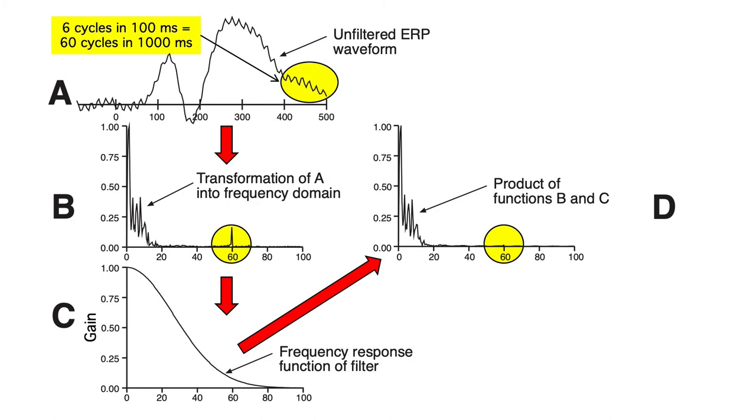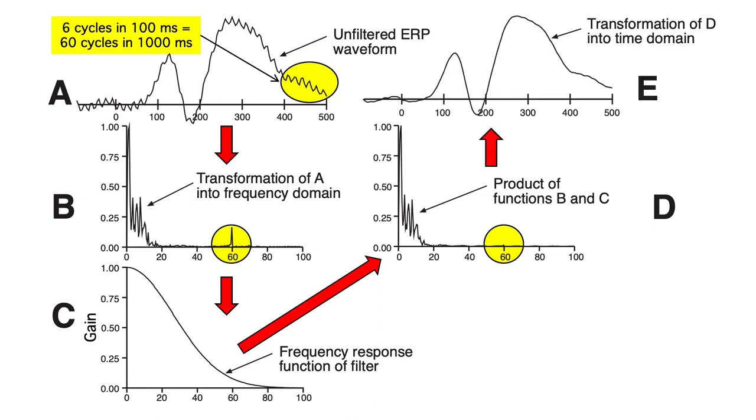This gives us the filtered data in the frequency domain. Notice that the low frequencies aren't changed by very much, but the 60 Hz is nearly eliminated. We then use the inverse Fourier transform to take the filtered data back into the time domain. Voila! We have a filtered ERP waveform that looks a lot like the original waveform, except that the high frequency noise is gone.